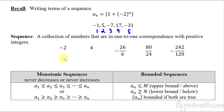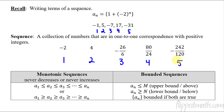What I mean by that is the first term corresponds to the first positive integer. For this made-up sequence, the first term is negative 2, the second number in the sequence is 4, and the third is negative 26 or 6. The third number in the sequence has to be that number — it can't be something else. That's what one-to-one correspondence is referring to. So there's the first five terms.